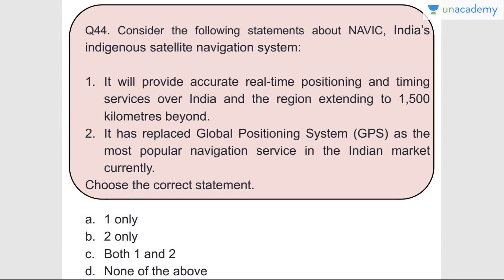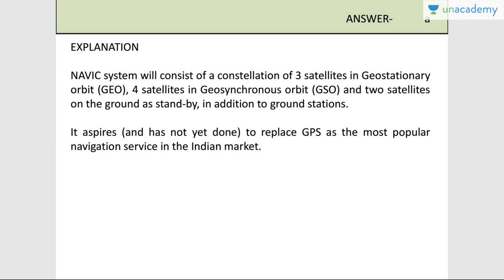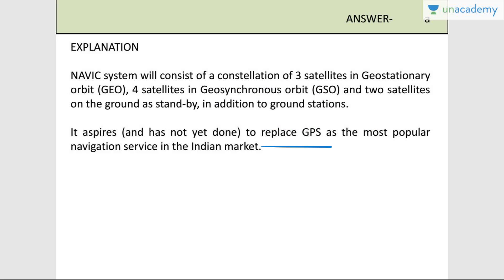Question number forty-four: Consider the following statements about NavIC, India's indigenous satellite navigation system. Statement one - it will provide accurate real-time positioning and timing services over India and the region extending to 1,500 kilometers beyond - correct. Statement two - it has replaced GPS as the most popular navigation system in the Indian market - wrong. Answer is A, one only. NavIC will consist of a constellation of three satellites in geostationary orbit and four satellites in geosynchronous orbit. It aspires to replace GPS but has not yet become the most popular navigation system in the Indian market.